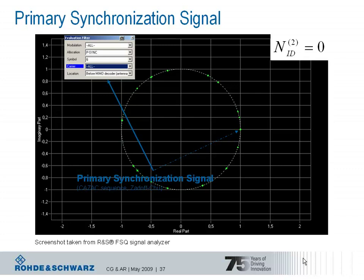With successful match filtering, the device has identified the used physical layer identity for this cell as well as 5 ms timing. Afterwards, it can execute the next step: looking for the secondary synchronization signal and the physical layer cell identity group to compute the cell's identity.